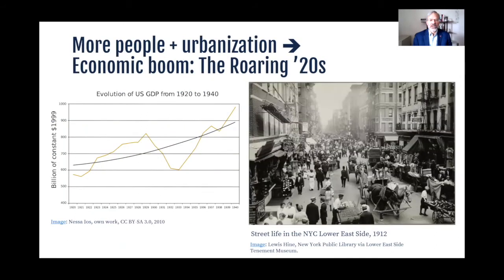The growing population was more productive than ever before as agriculture mechanized, with industries producing huge amounts of added value. This led to a big surge in the US gross domestic product from 1920 to 1929. I'll come back to the depression in another minute.